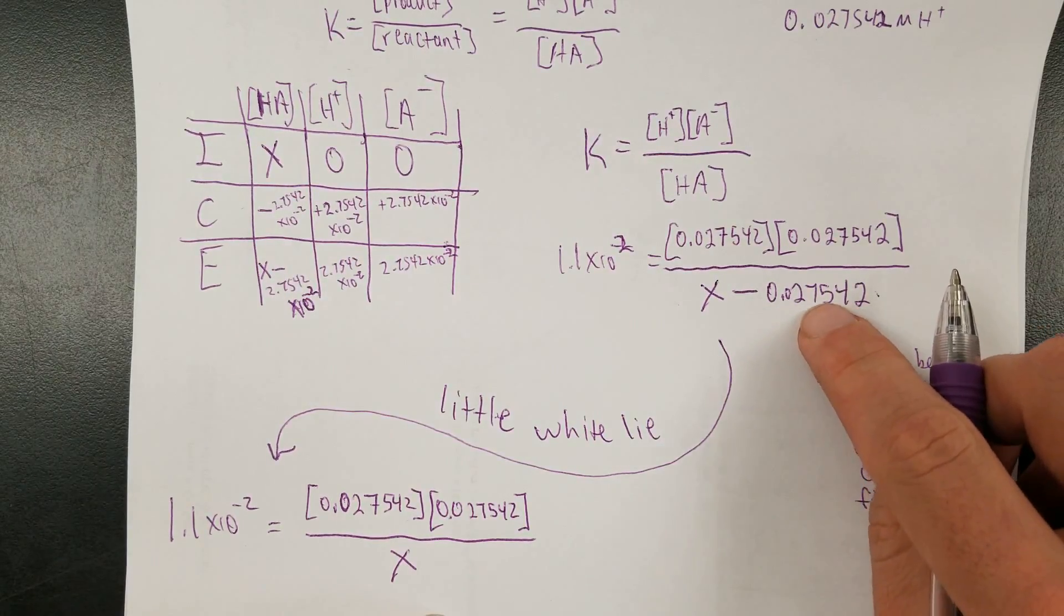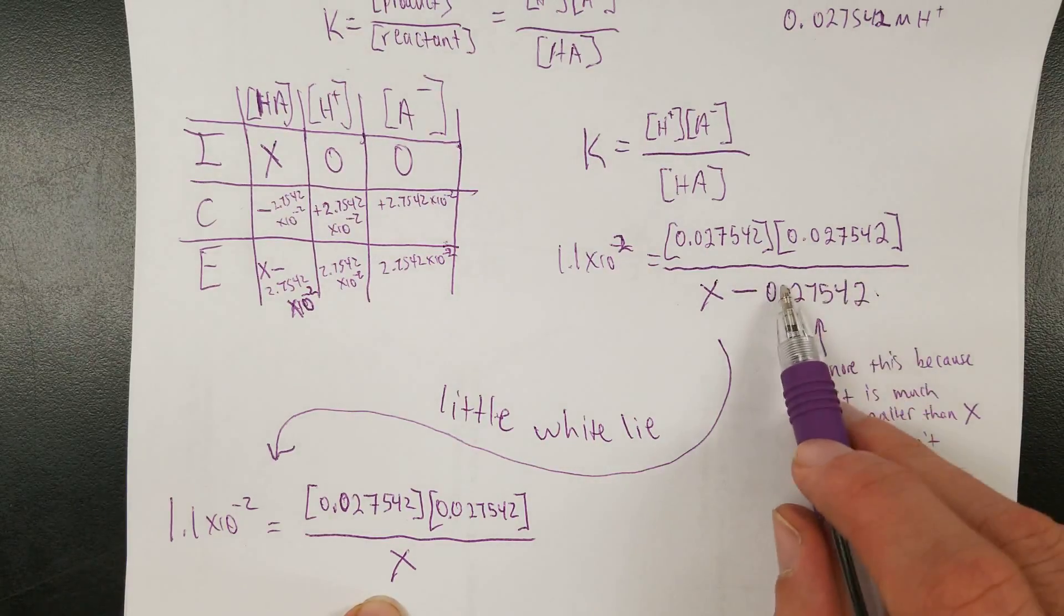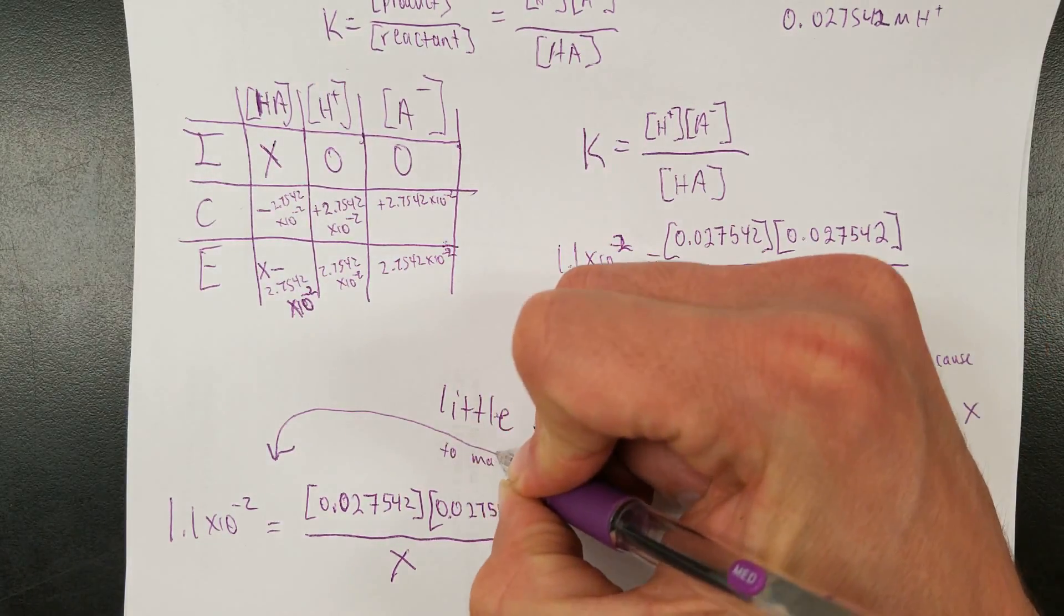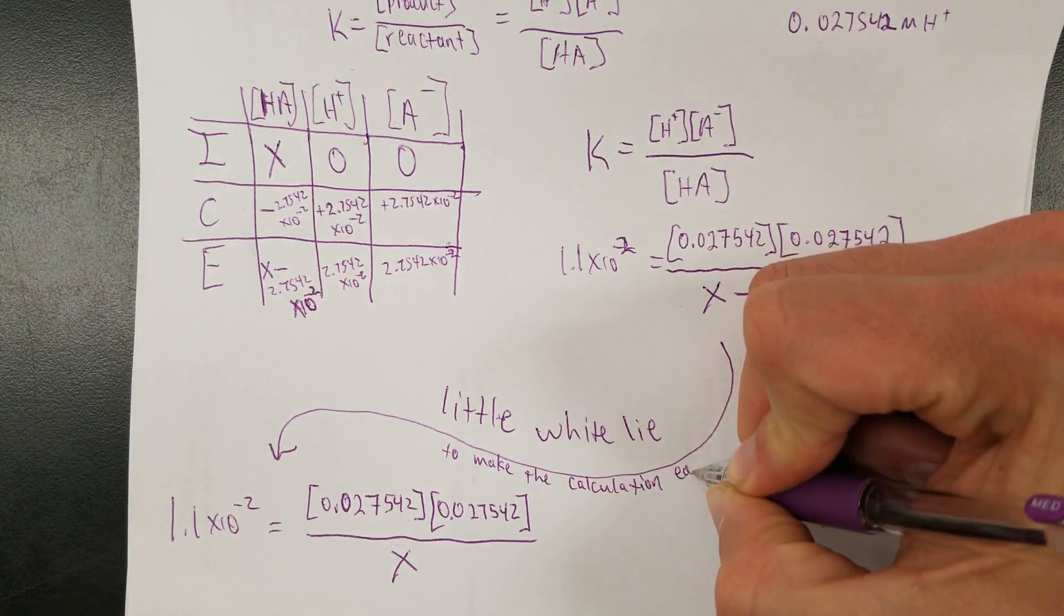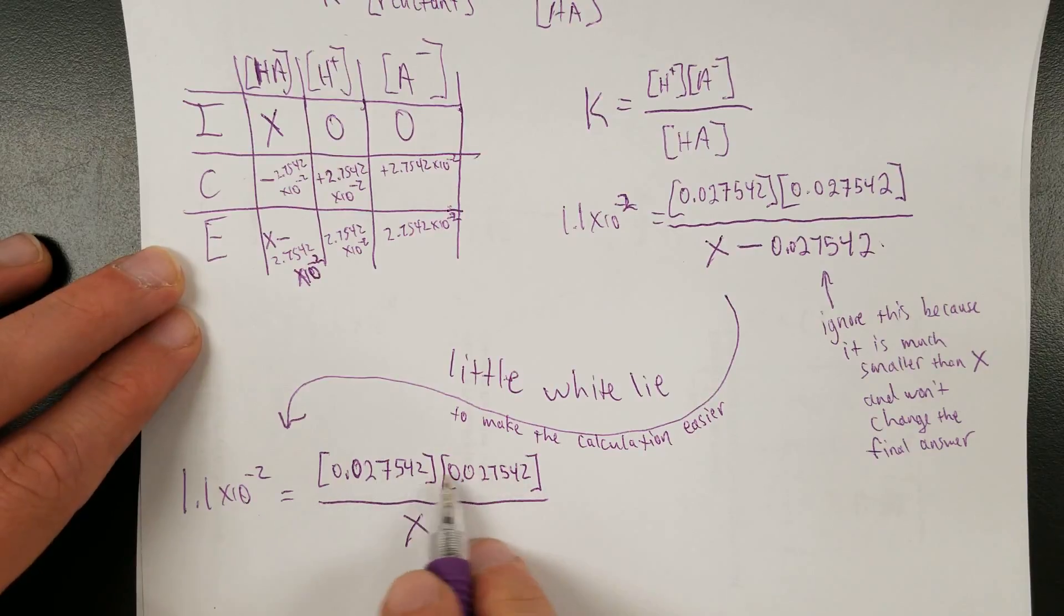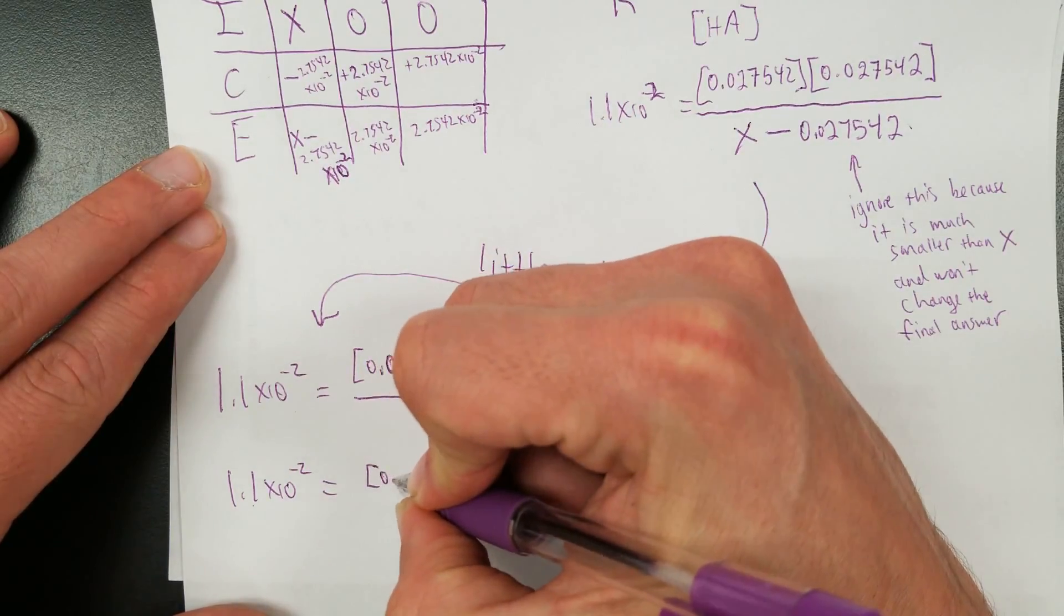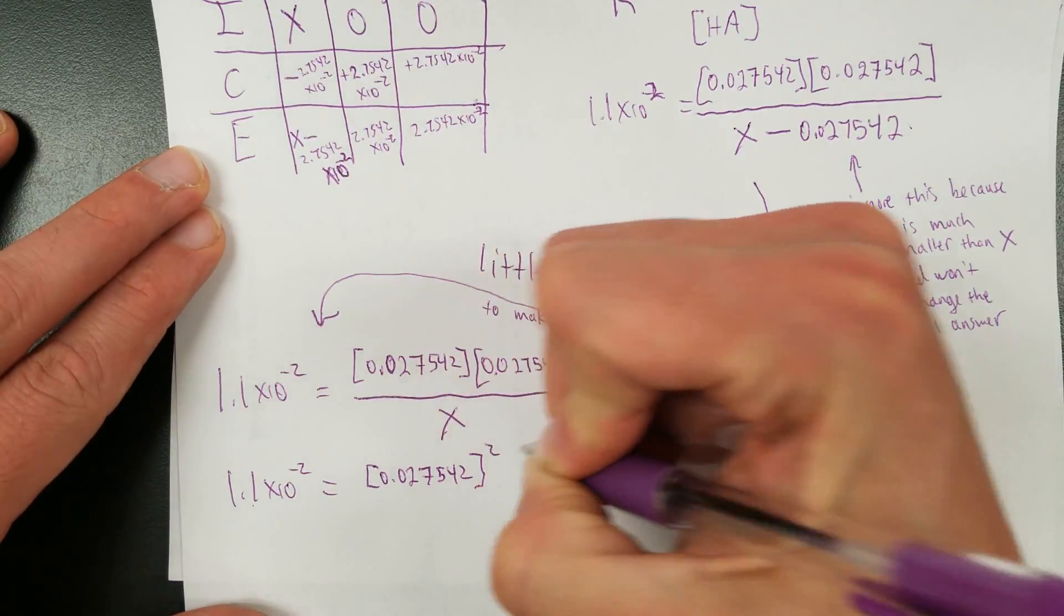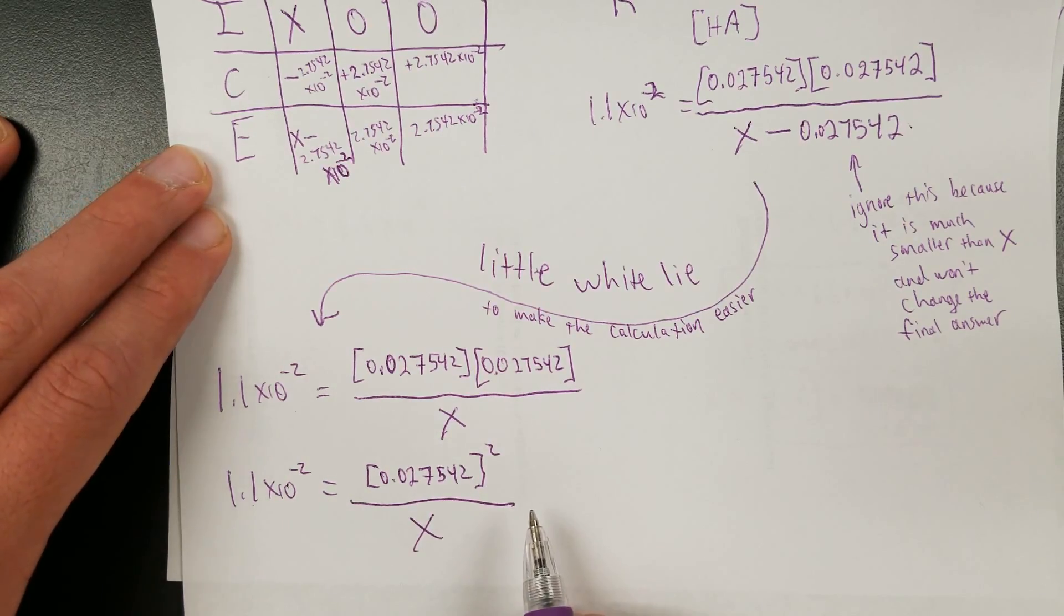See that? I'm lying to you when I say that this is the same thing, because it's not, but we're going to say this is small enough that it's not going to significantly change your answer if you leave it out. So there's my little white lie to make the calculation easier. So I'm going to combine these two because it's the same number. 1.1 times 10 to the negative second equals 0.027542 squared over X. Right? We combine these into just the same number squared. So that's easy.